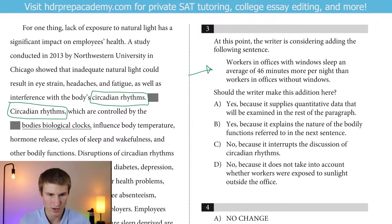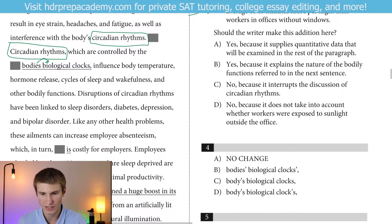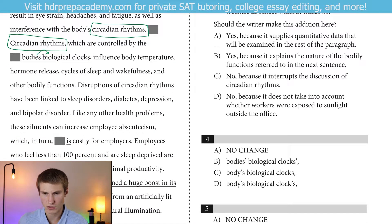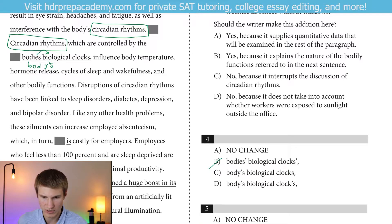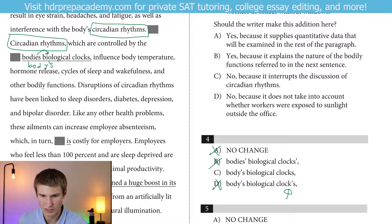So we have circadian rhythms, which are controlled by the body's biological clocks. Keep in mind that the body does have possession over the biological clocks. So it's going to be 'body apostrophe S' — B-O-D-Y apostrophe S. Our answer there should have that, so we can get rid of B. We can also get rid of answer choice A because it's got the wrong form of 'bodies.' We obviously know that bodies do possess the biological clocks, but the clocks don't own anything. So we can get rid of answer choice D. Our answer there would be C for number four.